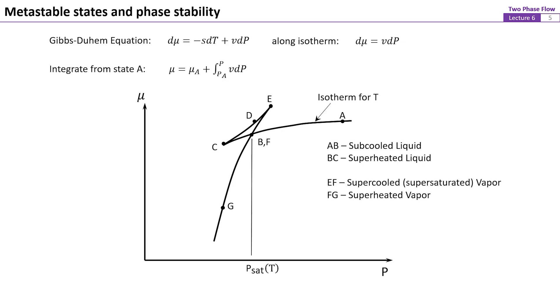Again, the AB section is the subcooled liquid, BC is superheated liquid, EF is supercooled vapor, and FG is superheated vapor. The portion from C to E is inaccessible.